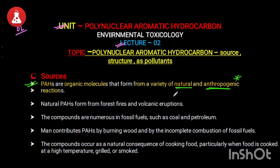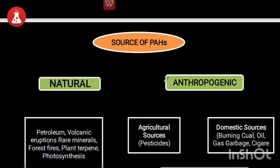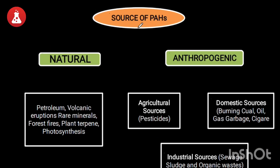To explain this point I will use a flowchart. It is very simple. There are two major sources of PAH: the first is natural sources, and the second is anthropogenic sources. From natural sources, natural reactions result in PAH as a product. From anthropogenic sources, human activities directly and indirectly cause the formation of PAH.